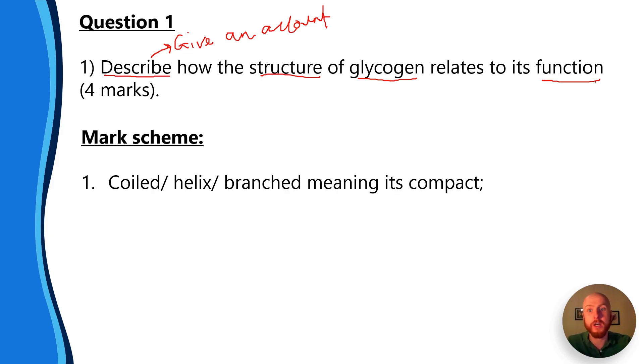Our first mark comes about for saying that glycogen is coiled or branched. Now glycogen is a polymer of alpha glucose and it's highly branched, so it's got those one to four carbon links and also one to six carbon links as well. I've got a video on carbohydrates for more information on that. What we also need to include for this mark is to say that it's compact, meaning that we can get lots of glycogen in each cell.